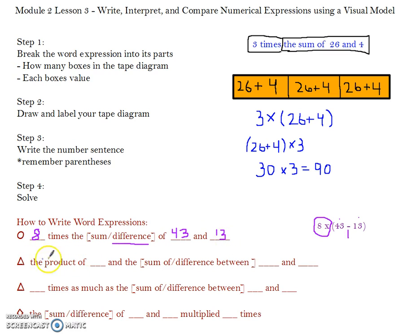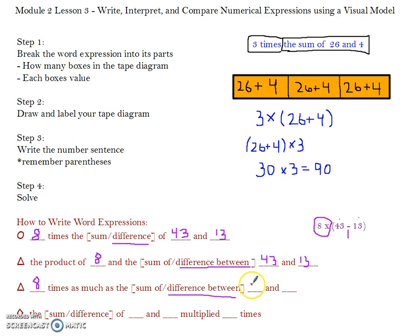For the third way: 8 times as much as the difference between 43 and 13. And finally, putting the parentheses expression first: the difference of 43 and 13, multiplied 8 times.